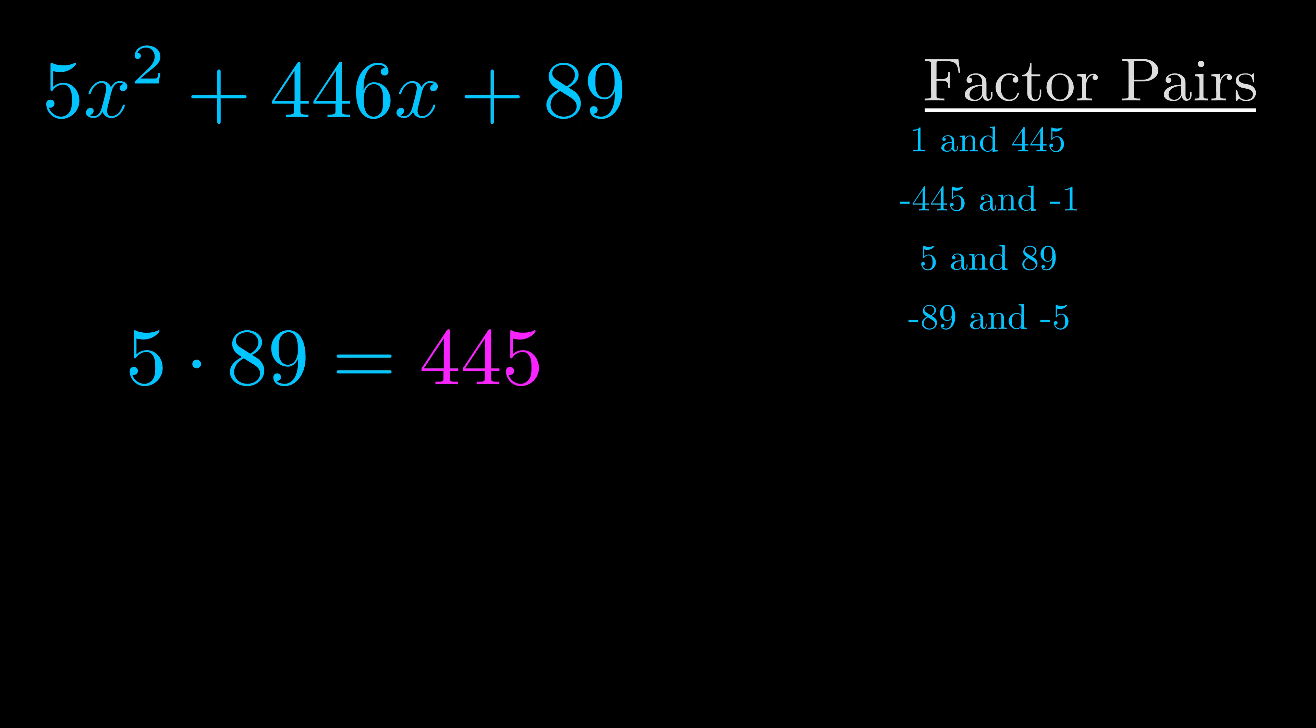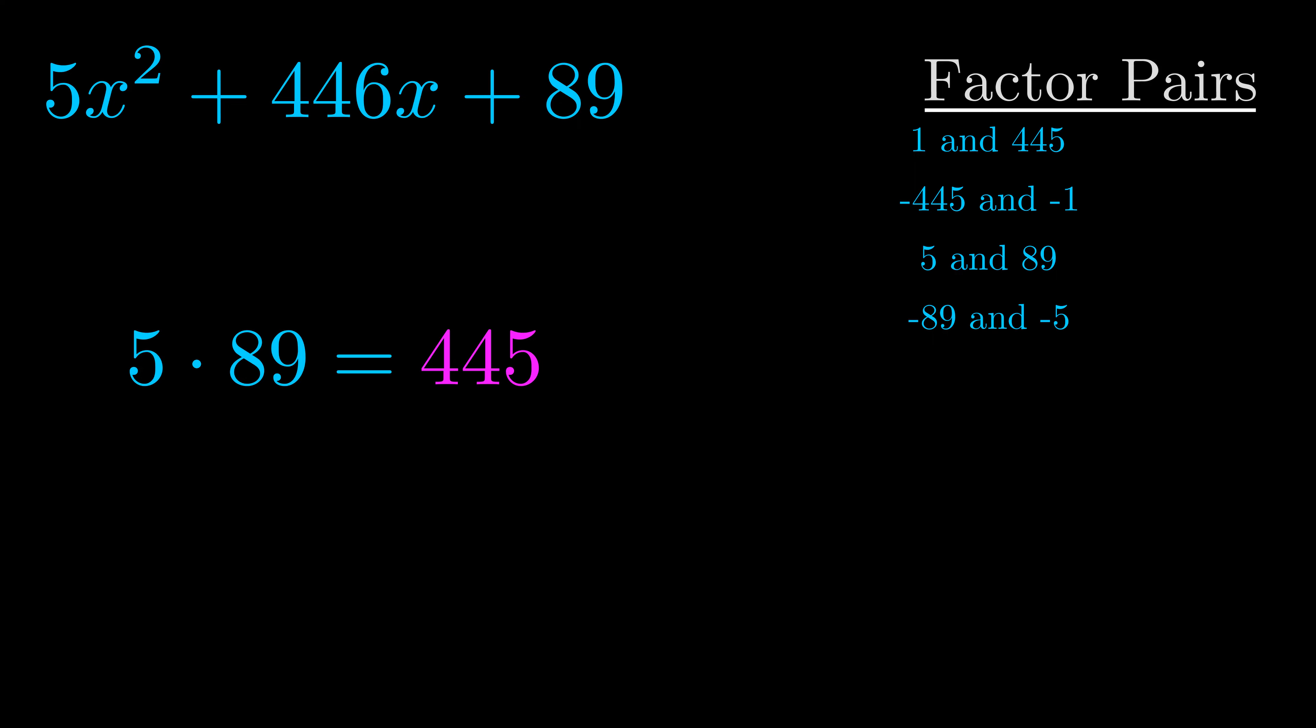Now once you have these factor pairs the goal is to find which of these pairs adds to the b value. The b value is the coefficient on the x term. That's the middle term, the one that we haven't done anything with yet. And really this is the only factor pair that we need.